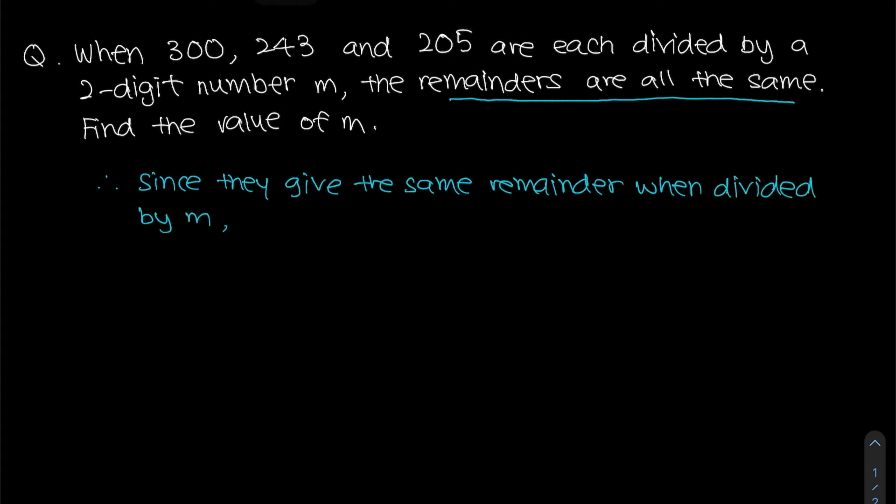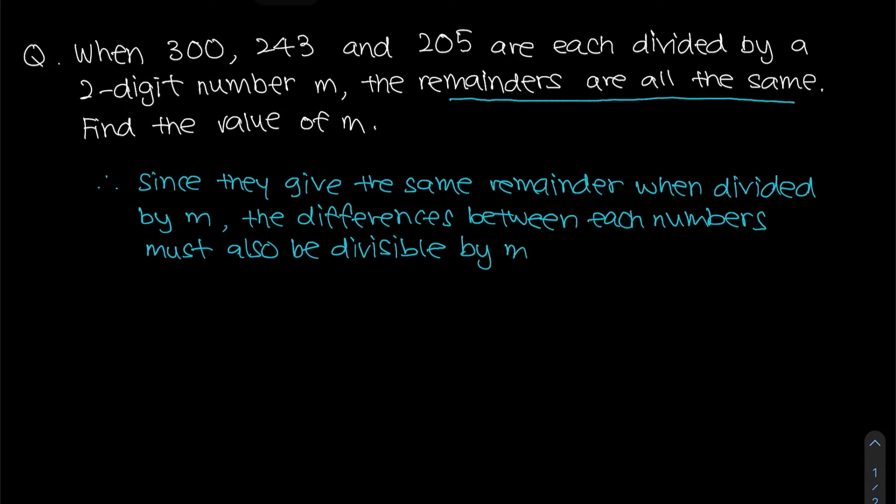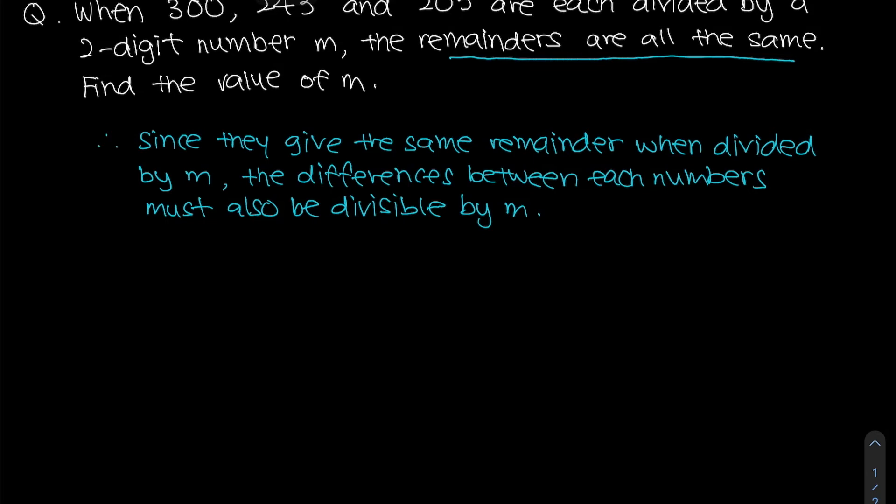This means that the differences between each number must also be divisible by m. Why is that so? That is because when you take the difference of the two numbers, the remainders actually cancel each other out to give you remainder 0. Which means to say that their differences will always be divisible by this two-digit number m.